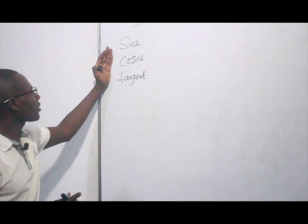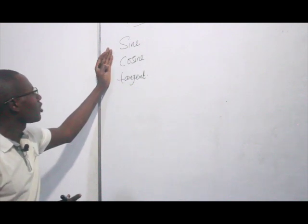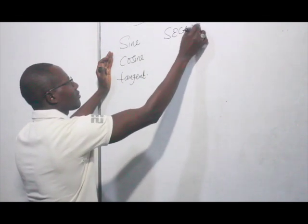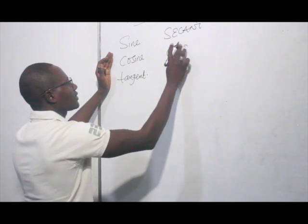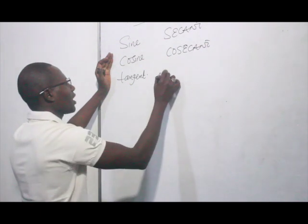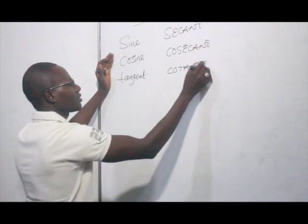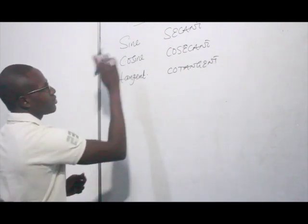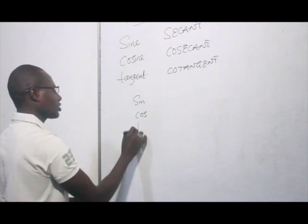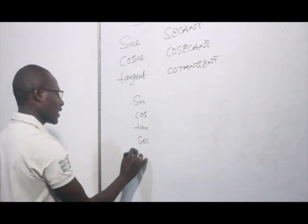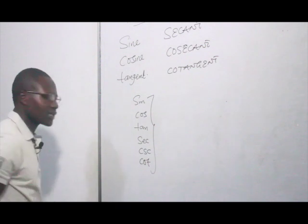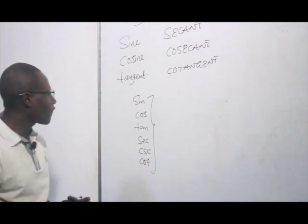This function further groups into other parts. We have secant, then we have cosecant, and then we have cotangent. So generally, we have the sine, the cosine, the tangent, the secant, the cosecant, and the cotangent.